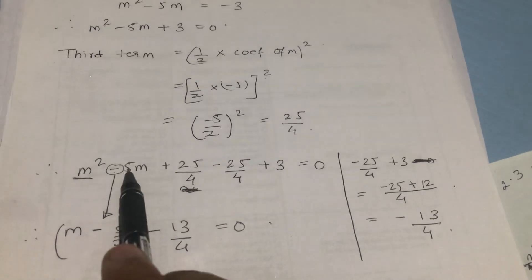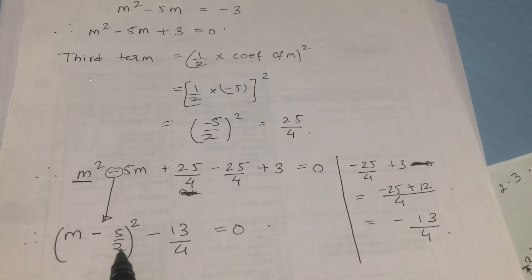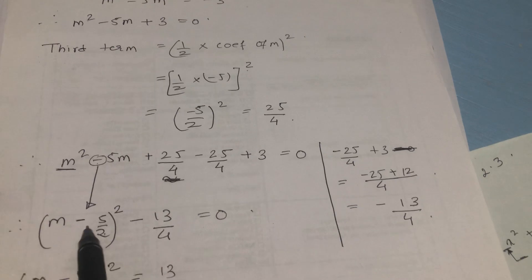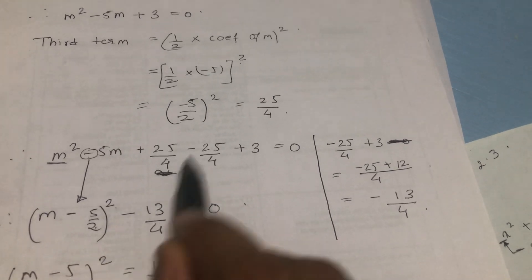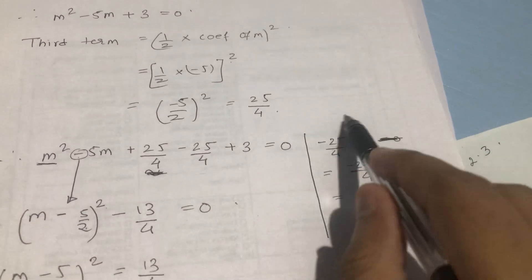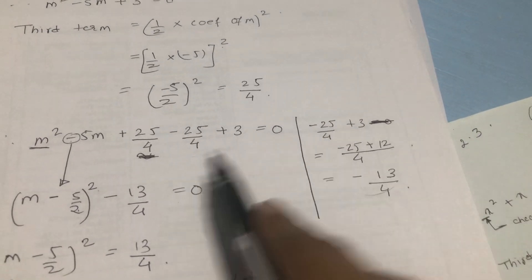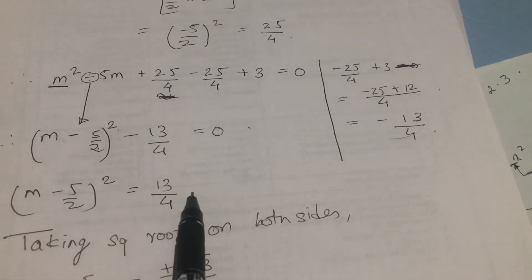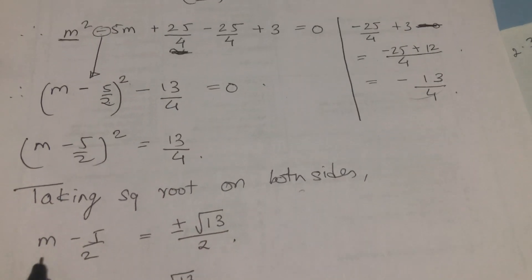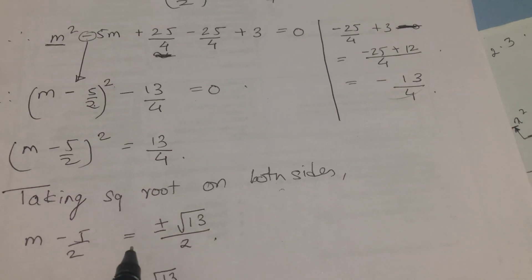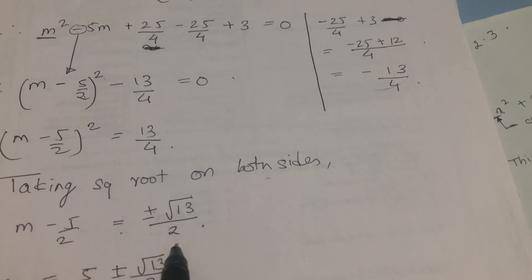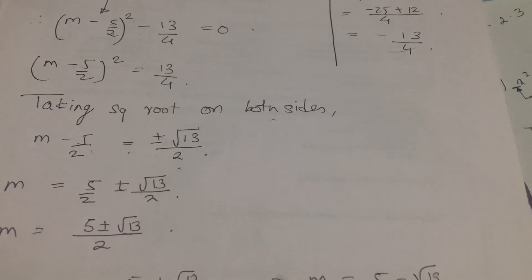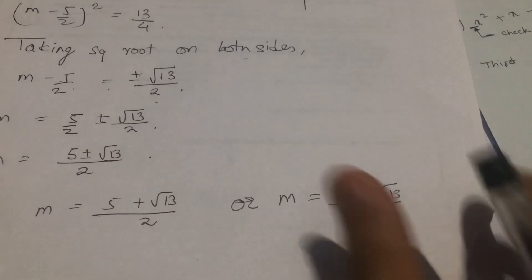Take the square root of the first term, sign of the second term, and square root of the third term — this makes the complete square: (m - 5/2)². The remaining terms can be solved separately; by taking LCM you get minus 13 upon 4, equal to 0. So 13/4 goes to the other side. Taking square root on both sides: m - 5/2 = ±√13/2. Taking 5/2 to the other side gives m = (5 ± √13)/2.